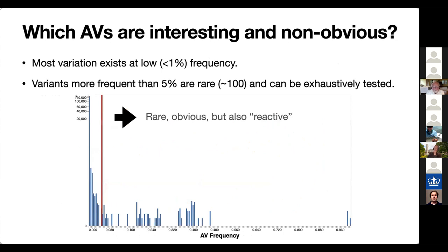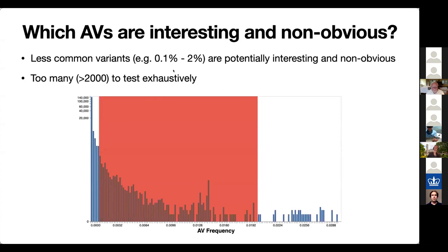If you look at the distribution of what I call allelic variants — I distinguish allelic variants from 'variants,' because variants have now come to imply the entire genome, more like a lineage, whereas in traditional genomics a variant would just be a SNP — allelic variants exist at a very unequal frequency distribution. On a log scale, if you look in the tail at 5% or greater, there's not that many mutations: about 100 or so. Those are obviously interesting because they're at high frequency — the D614G, 501Y, and so on. The vast majority of variation exists at low frequency, less than 1%. The variants at 0.1 to 2% are potentially interesting and not obvious. There are over 2,000 of them, too many to test exhaustively.